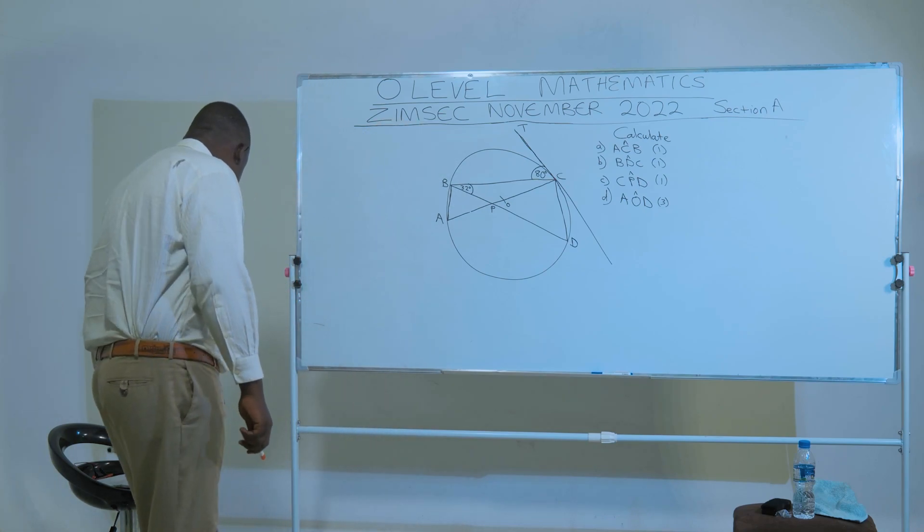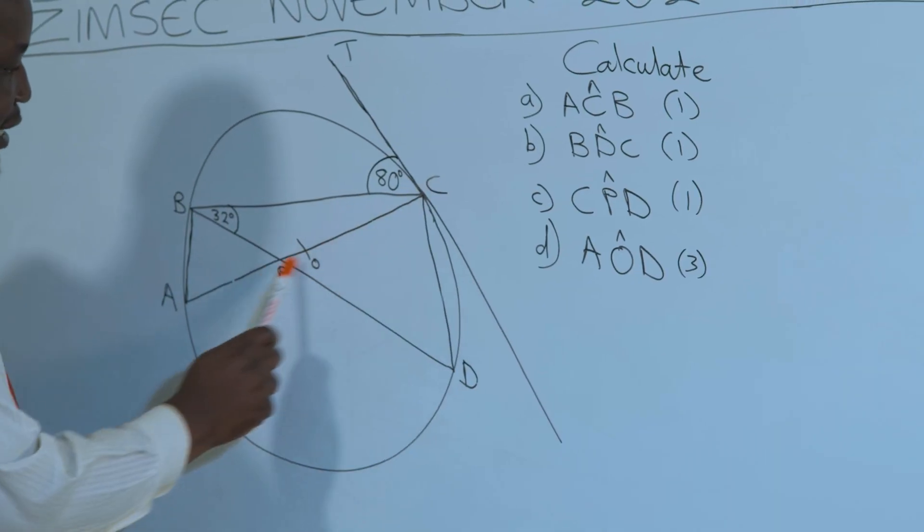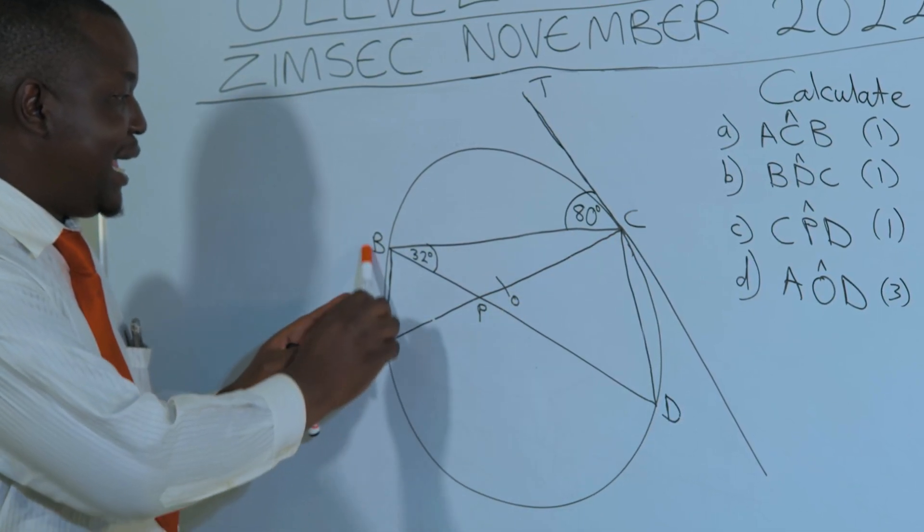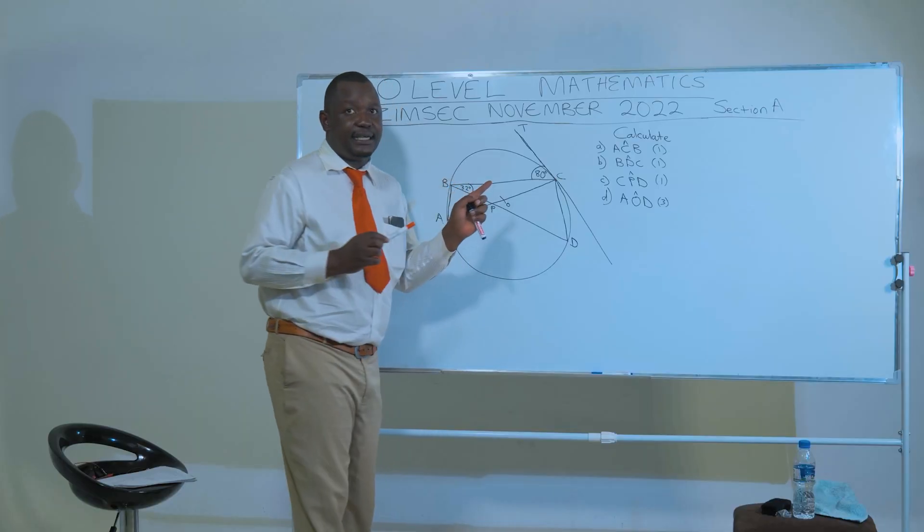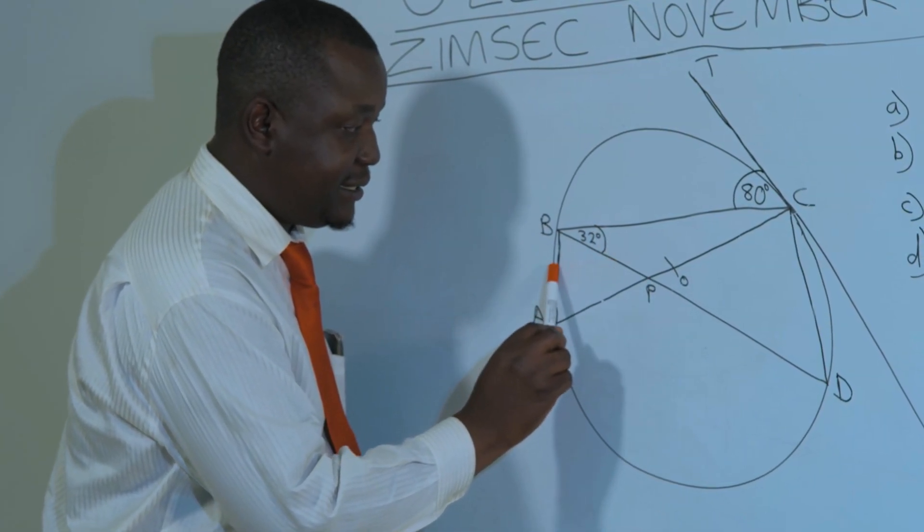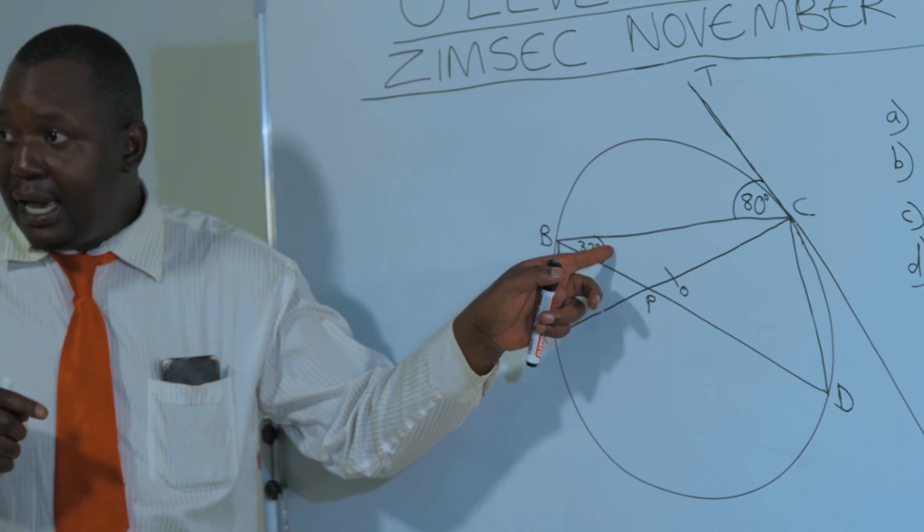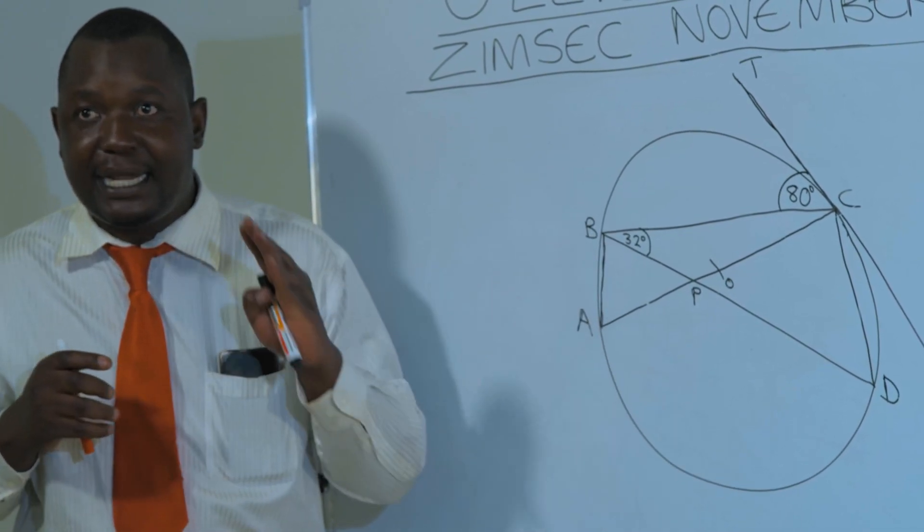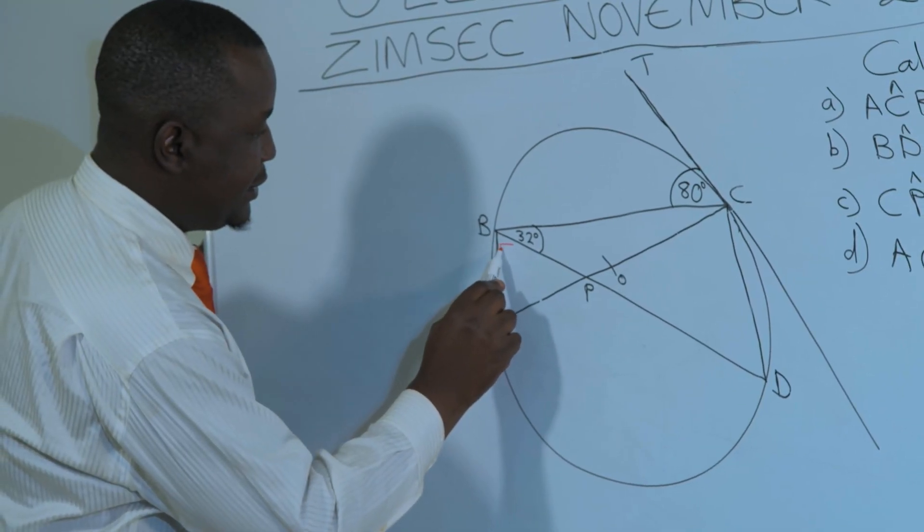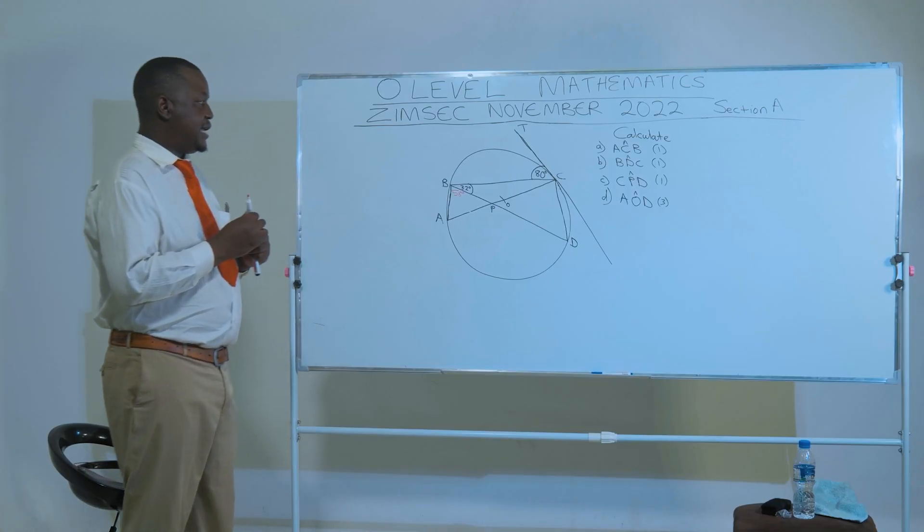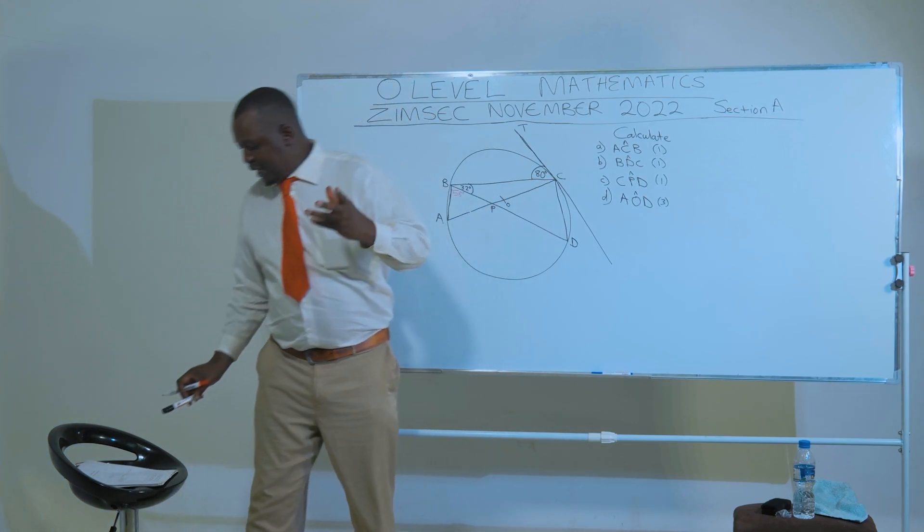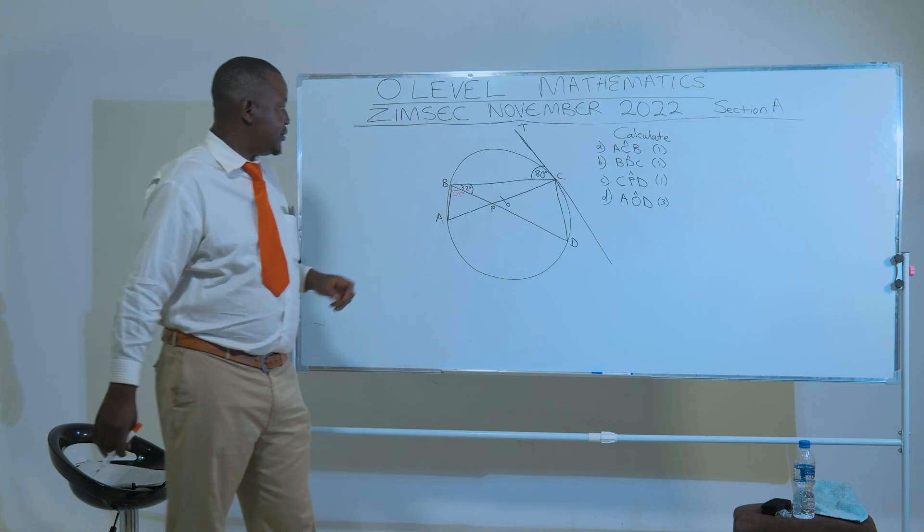So let's try to solve this whole circle here. First and foremost, as you can see, this is a diameter. And there's a theorem which states that the angle that is subtended by a diameter at the circumference is 90 degrees. So what we know here is that this angle here is supposed to be 90 degrees. But we have 32 degrees here, meaning to say this angle here is going to be 90 minus 32. And 90 minus 32 is going to give us 58 degrees. That's the first piece, the first missing piece to our jigsaw puzzle.